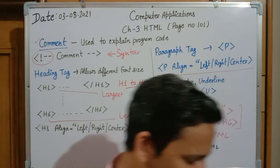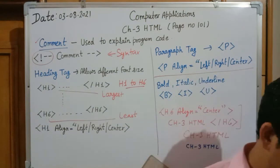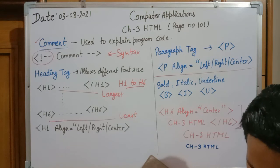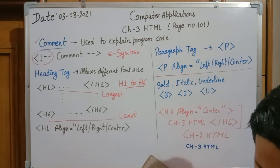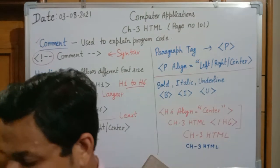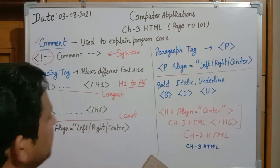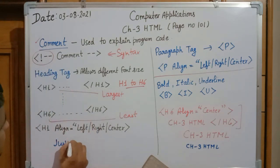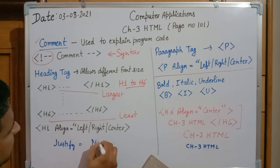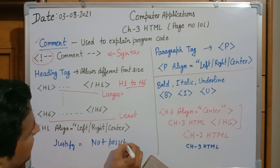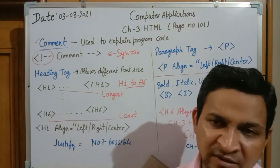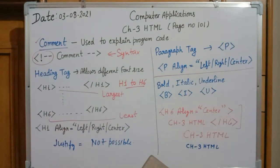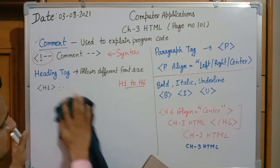Heading 5 has no alignment so it displays on the left side, and h6 also displays on the left. The font size of h1 is largest, h2 is smaller, and so on down to h6 which is the smallest. Important MCQ note: justify alignment is NOT possible in HTML headings. The only valid alignments are left, right, and center.